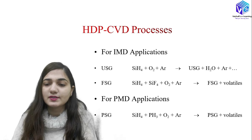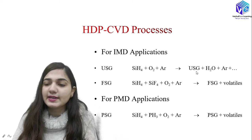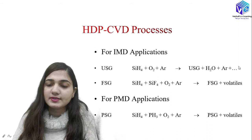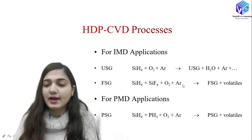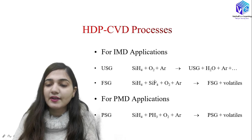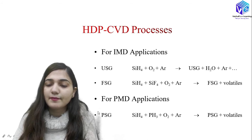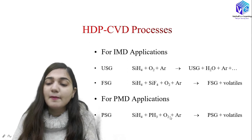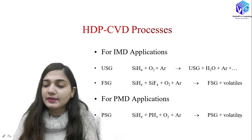Now coming to HDP-CVD processes — we have different types of processes for different applications. For USG, the source gases like SiH4, O2, and argon give undoped silicate glass with byproducts like H2O and argon. For fluorosilicate glass formation, the source gases are SiH4 + SiF4 + O2 + argon — SiF4 is the additional compound used here. For PSG, the source gases are SiH4 + PH3 + O2 + argon, where phosphine is the additional compound, giving phosphosilicate glass and volatiles.